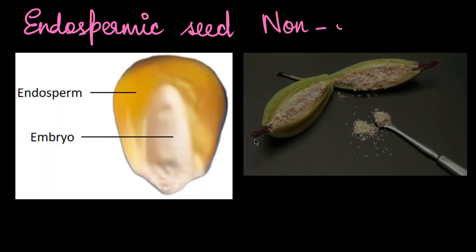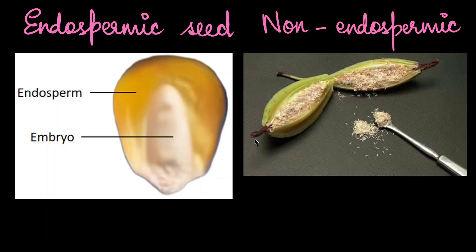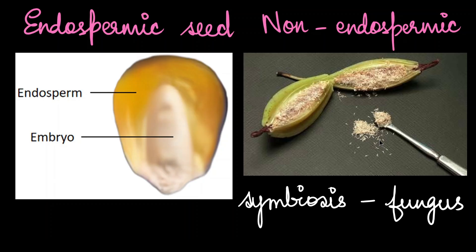Most monocot seeds are actually endospermic — they retain the endosperm even at maturity. However, we have a very interesting example of a non-endospermic monocot seed: the orchid seed. Orchids do not produce any endosperm because they have a symbiotic relationship with fungus, and the fungus provides the nutrition for growth and germination. So there is no need for endosperm in an orchid seed at all.